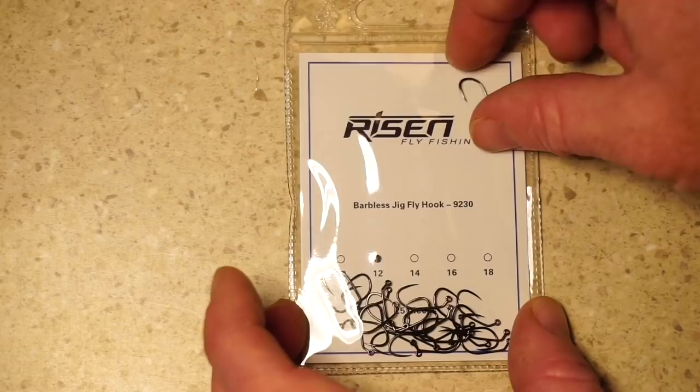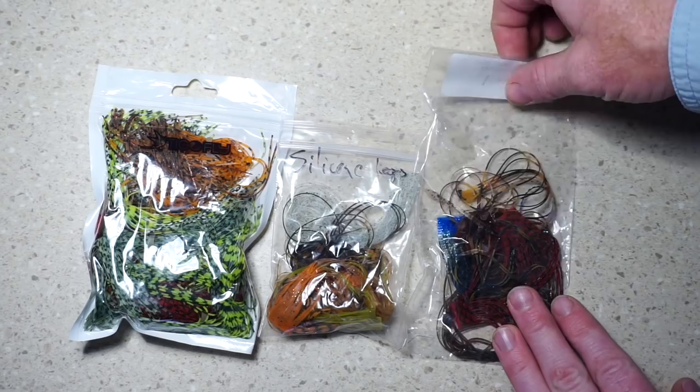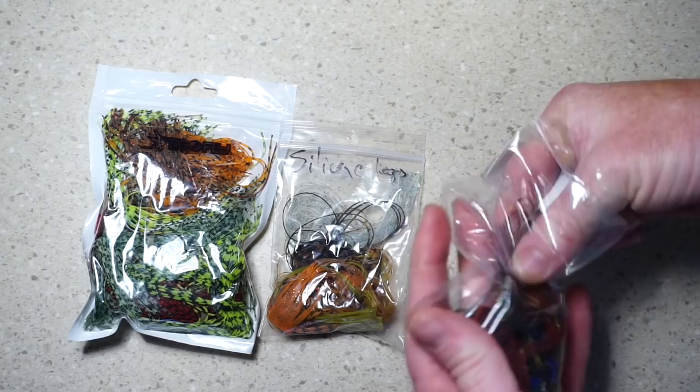For the tail of the fly, we're simply using a rubber leg material. There are a wide variety of styles and colors of these that you can buy online. All of these here I got on either eBay or Amazon.